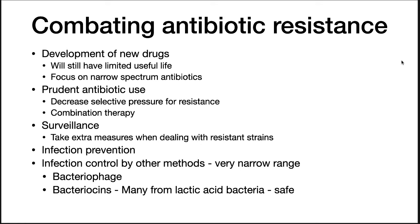Infection control by other methods is also under active development, with one big advantage being they are very narrow range. One thing under active development is bacteriophage — you can isolate viruses against every known pathogen, and when someone gets an infection you treat them with the virus. The bacteriophage kills the pathogen selectively, leaving everything else alone.